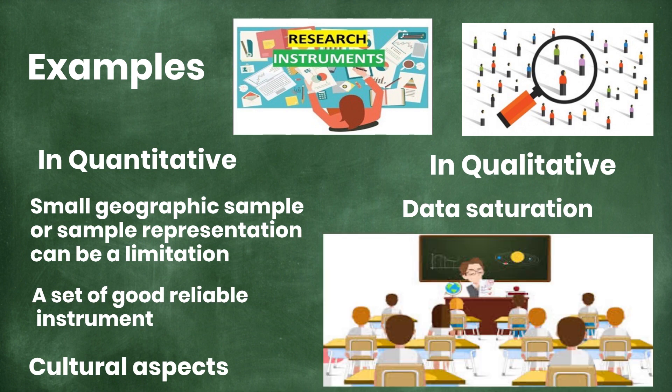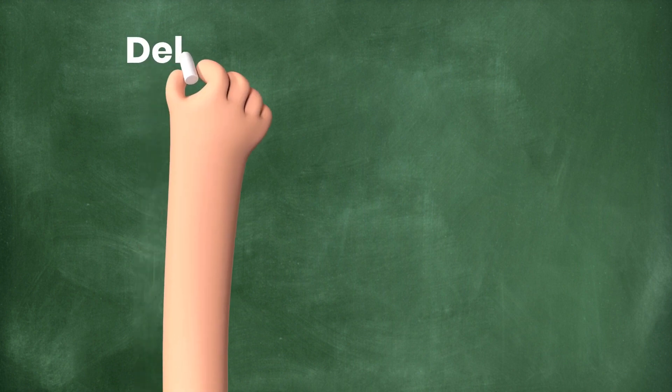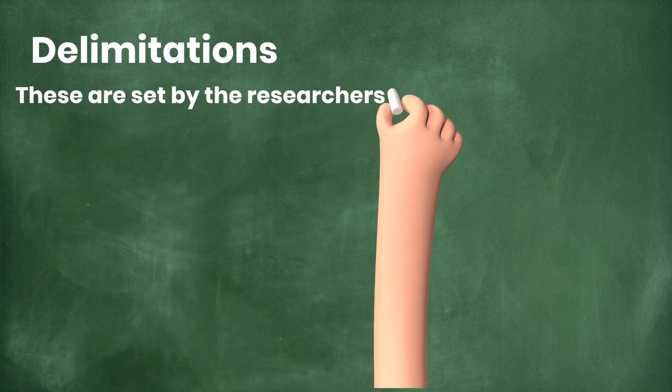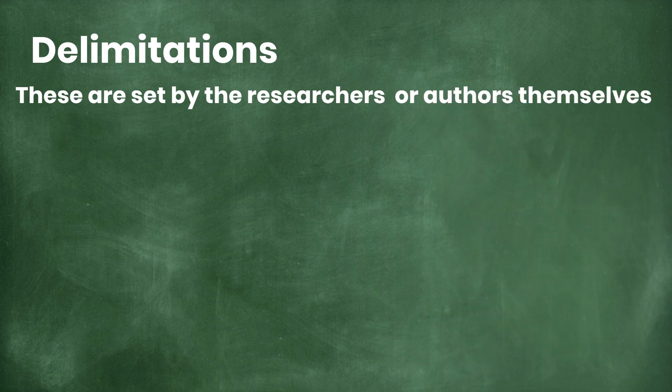In qualitative research, it may be data saturation point or other things which are not in your control. Such as in my PhD study, when I was conducting children interviews and their teachers were present in the same room — this is a limitation of my study, as children might have answered all questions under the pressure of their teacher's presence.